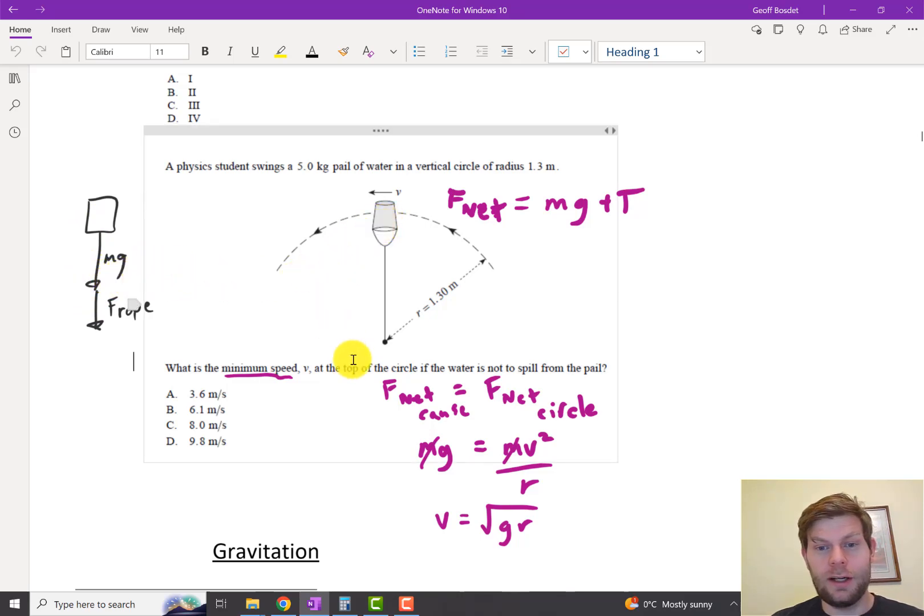And so in that case, that just tells us what our net force is. At a higher speed, this is what causes the net force, but at the minimum speed, the rope is not pulling at all. It's just gravity keeping it moving in a circle, so our net force - the cause - is just m times g.